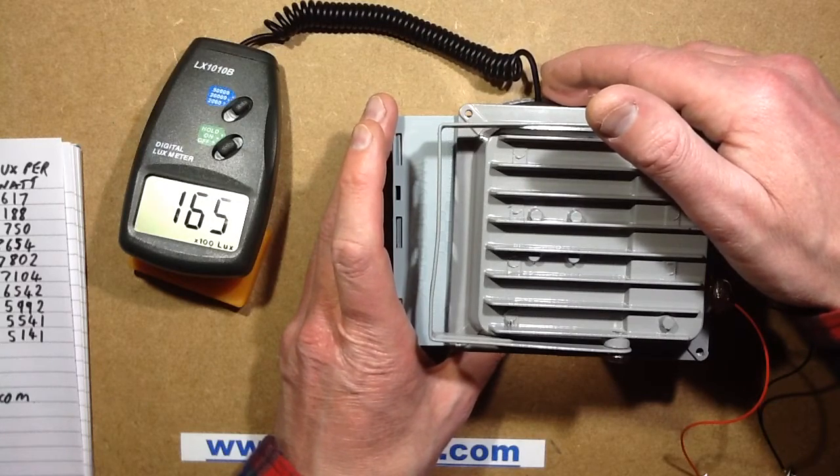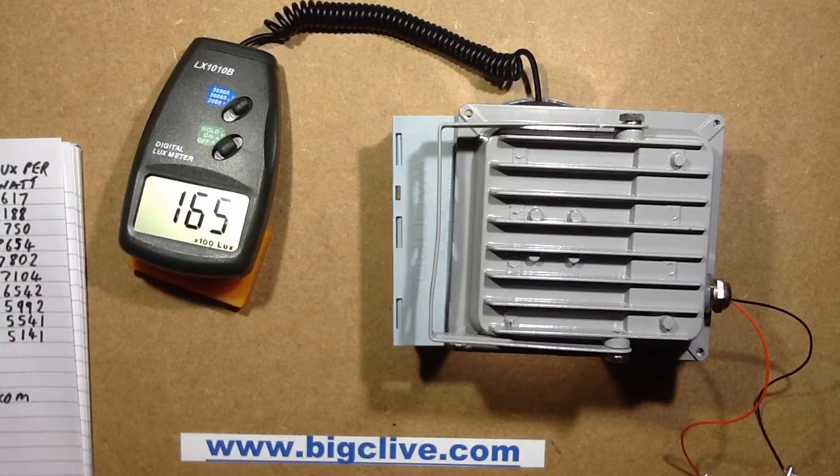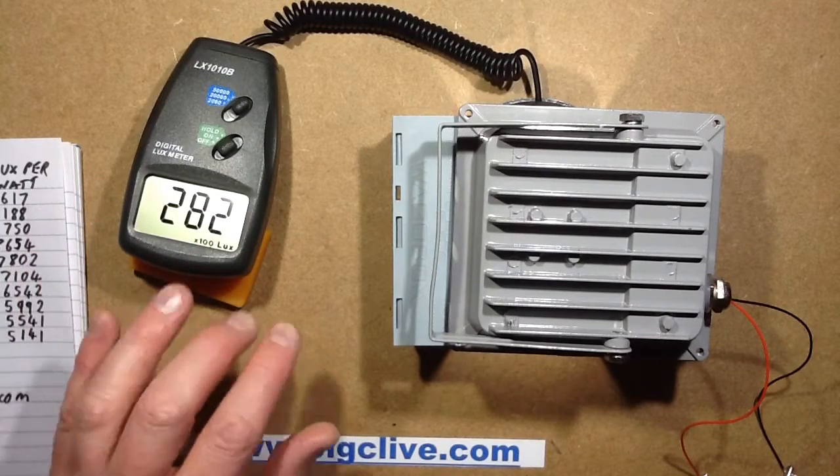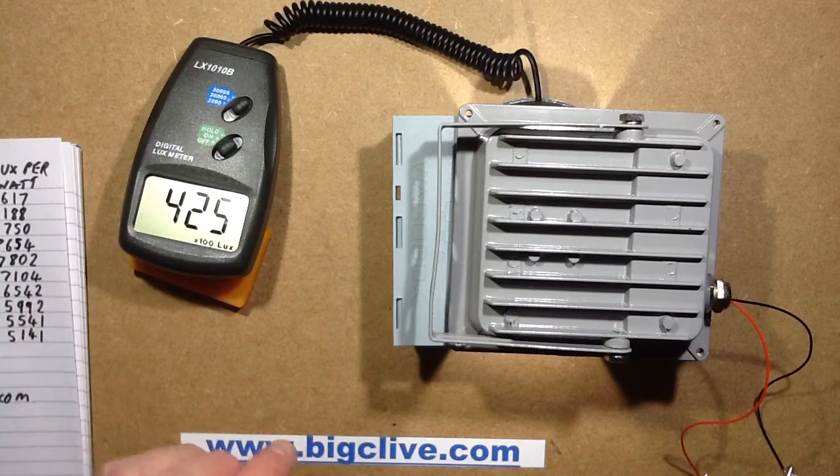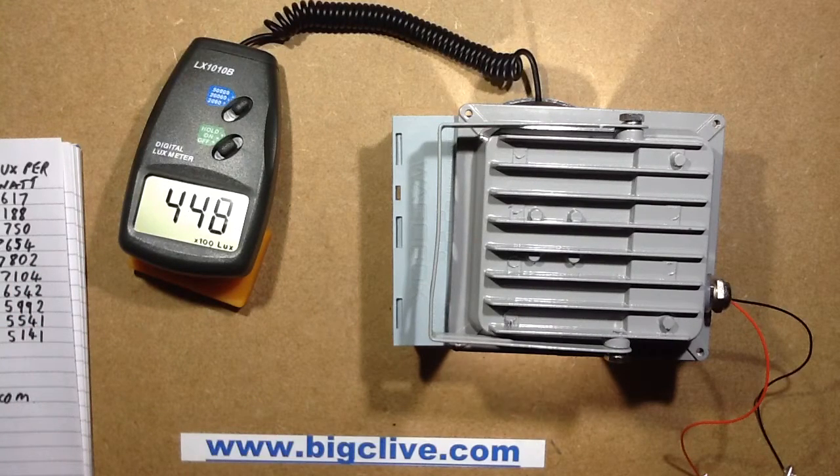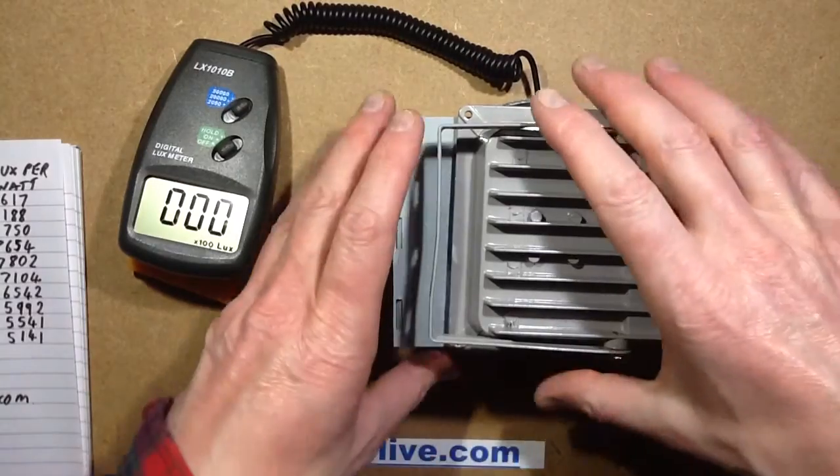Once I had it, I then stepped the current up in 100mA, 200mA steps. As the current went up, the LUX output—this is LUX times 100—went up too, and I logged it all. Here are the results.